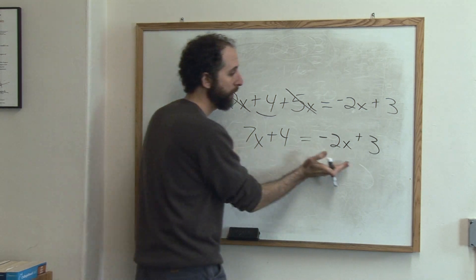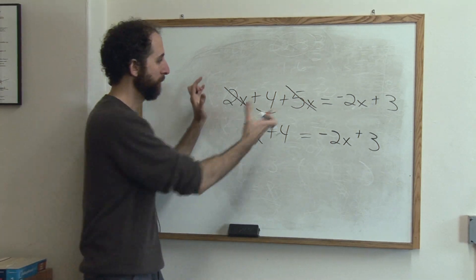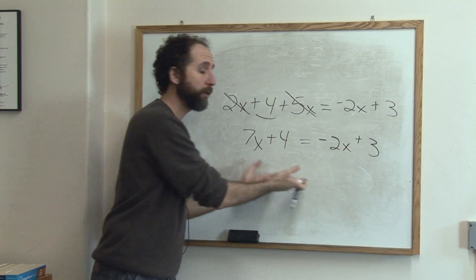Now we've got a like term on this side and on this side, so we're going to combine across. This is important. First you combine on one side and on the other, then you combine across.